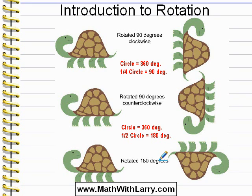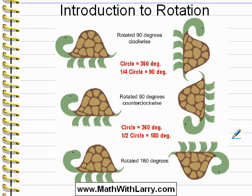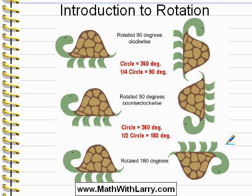Now in the last example, I started out with the drawing in the same position as the other two, but here what I did was I rotated it half a circle. Half of 360 is 180, so we can say that this is a 180 degree rotation. Make sure you notice that it doesn't matter whether I rotated this object clockwise or counterclockwise — either way, I would have ended up with the object in the same position. When you rotate 180 degrees, a half circle, clockwise or counterclockwise, it doesn't matter. It ends up in the same place.